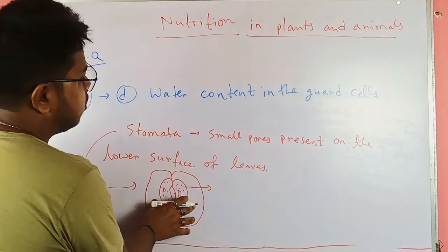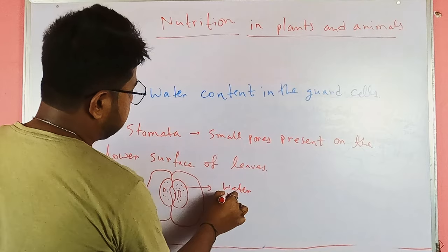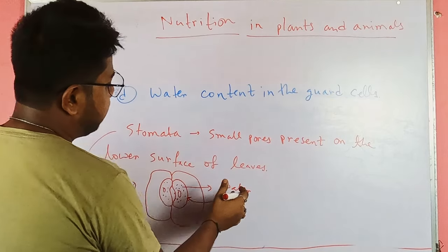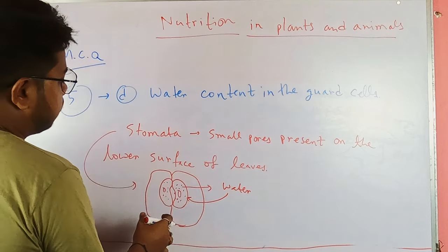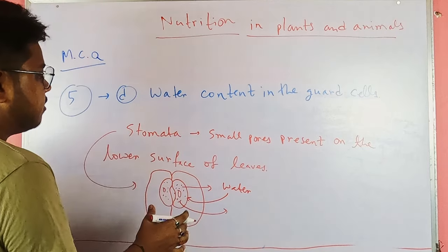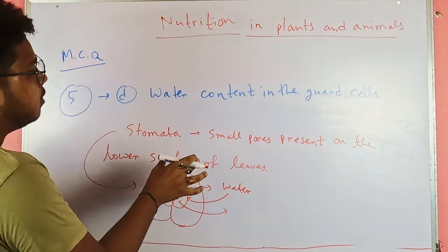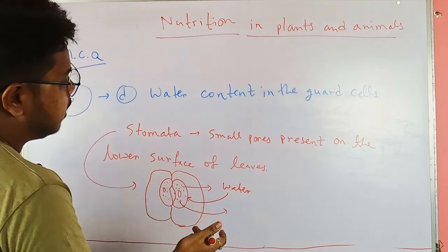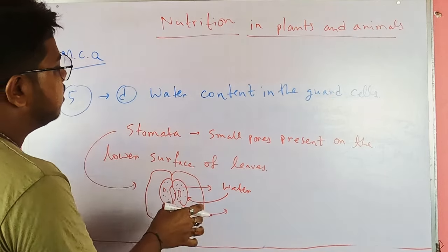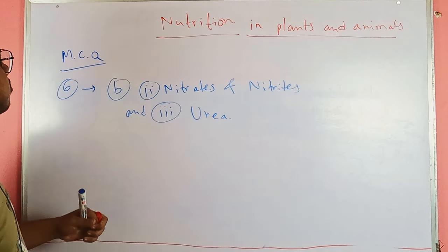The opening or closing of stomata depends on the water content or turgidity within the guard cells. When water enters the guard cells, they become more turgid and larger, causing the stomata to open. When water is released, the guard cells shrink and the stomatal pore closes.